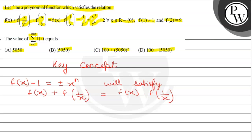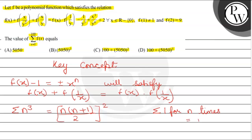Along with this key concept, we will use some formulas. The formula for the sum of cubes of n natural numbers is equal to [n(n+1)/2]². We also know that the sum of 1 for n terms will be n. These are the key concept and two formulas which we will use in solving this question.